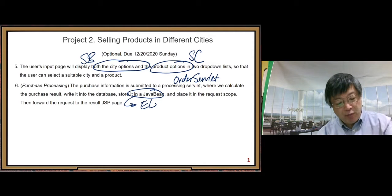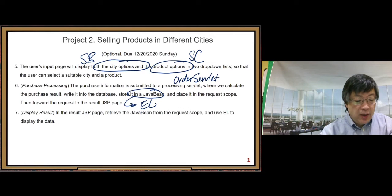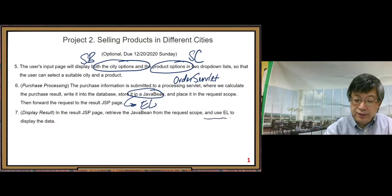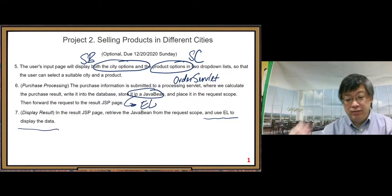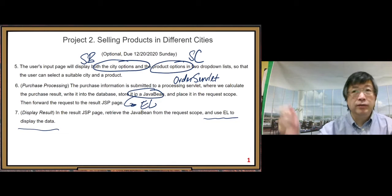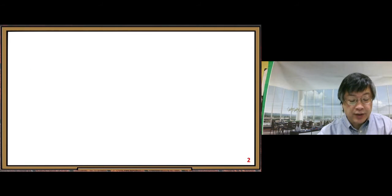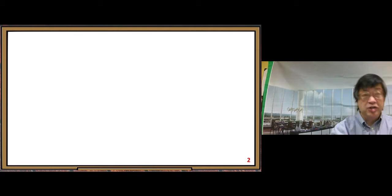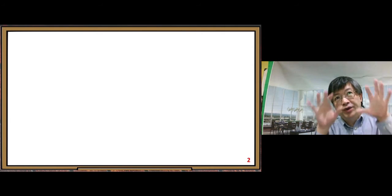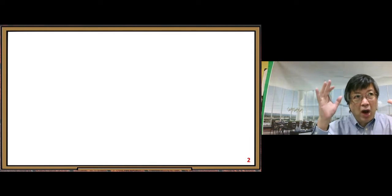This part lets us practice EL a little bit. Requirement number seven is display result — we use EL for that, which is simple. First, let's look at the interface part where we want to put the two drop-down lists together.